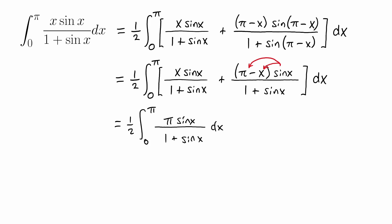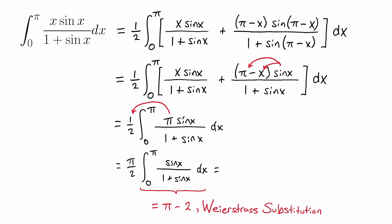We can recognize this as being close to an integral we evaluated before in the Art of Integration if we pull this factor of pi out front. So let's write this as pi over two times the integral from zero to pi of sine of x divided by 1 plus sine of x. Earlier, we showed that the value of this remaining integral evaluates to pi minus two, and we did that using Weierstrass substitution. I'll have that linked below in the description in case you haven't seen that.